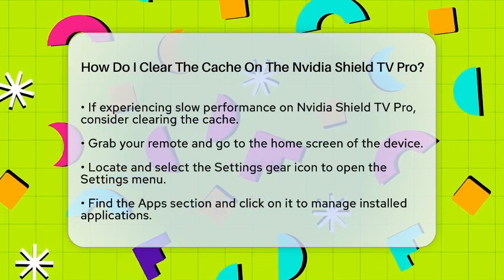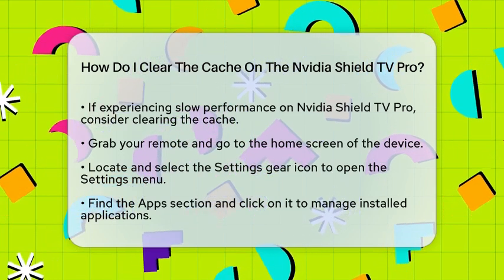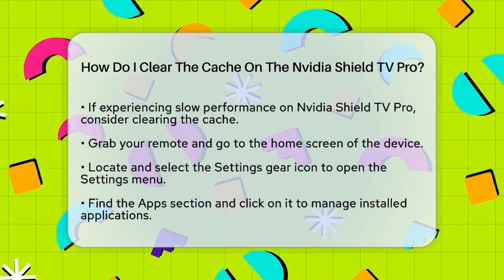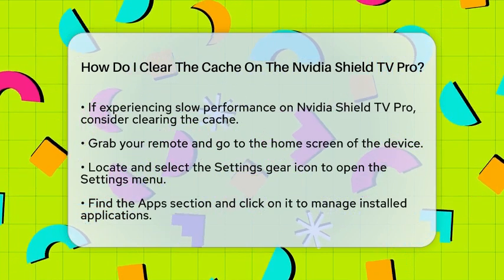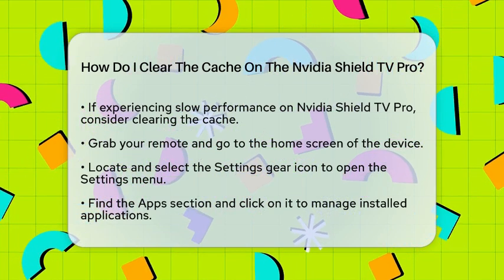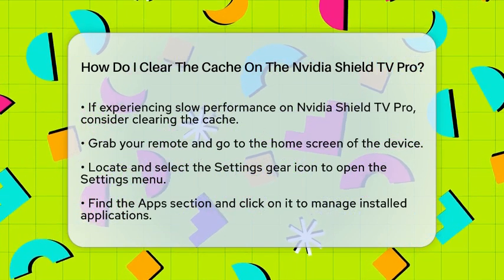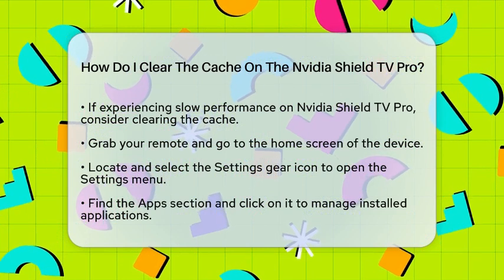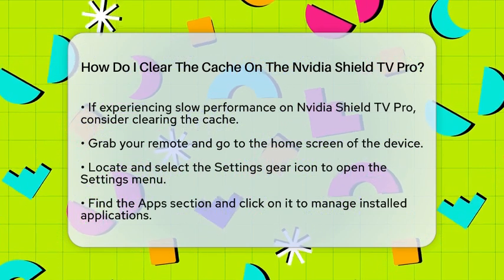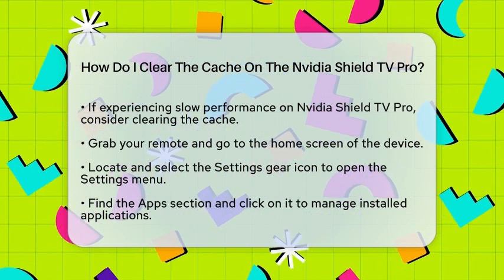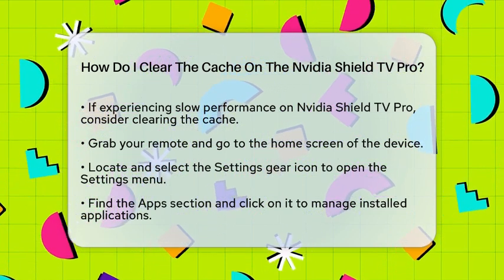First, grab your remote and head to the home screen of your NVIDIA Shield TV Pro. Look for the settings gear icon and select it. This will open the settings menu where you can adjust various options.